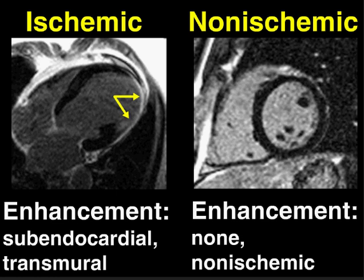The pattern of enhancement is also different on delayed enhancement imaging. Patients with ischemic dilated cardiomyopathy virtually all show some enhancement, with a pattern consistent with prior infarction — enhancement of the subendocardium, and particularly in regions of wall thinning, transmural enhancement. In contrast, patients with non-ischemic cardiomyopathies frequently show no enhancement at all on delayed enhancement imaging, and if they do, it's in a pattern more suggestive of a non-ischemic process.